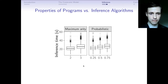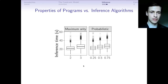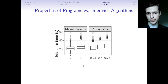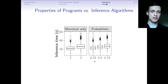We also examined the maximum arity of any predicate — ensuring that arity is actually achieved — and found that programs with higher arity predicates tend to be more difficult to reason with, but not by much. We also varied the proportion of facts that are probabilistic, meaning their probability is not equal to one, and more probabilities in the program also tend to make inference slower.